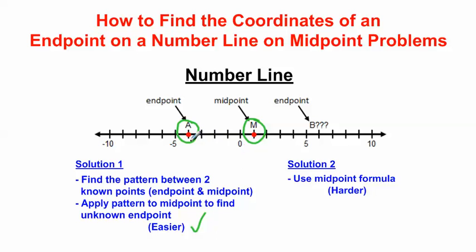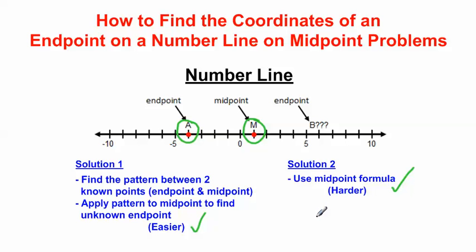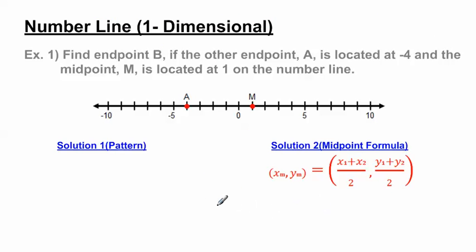But what if the endpoint was much further away? Then it might take forever to do it that way. So there's another way, which is a little bit more challenging because it requires more math. We can use the midpoint formula to figure out what the unknown endpoint is going to be. You're probably going to use the pattern method more often, but it's worth knowing both ways depending on what your teacher requires.